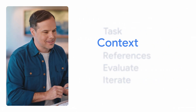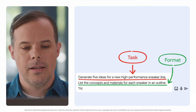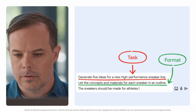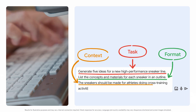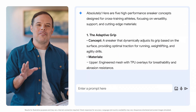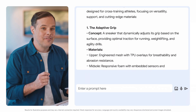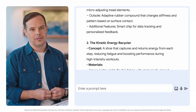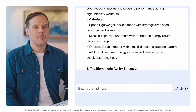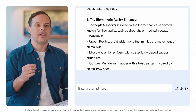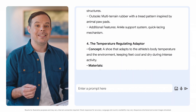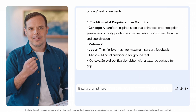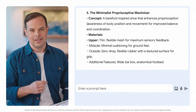Let's add some context: 'The sneakers should be made for athletes doing cross-training activities.' With the new information, Gemini created five new sneaker ideas that are more suited to our specific goals. Remember, getting tailored outputs means we need to provide a Gen AI tool with more details and context in order to generate more useful results. Success is all about the details.